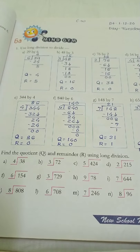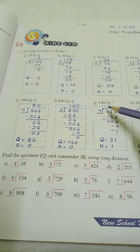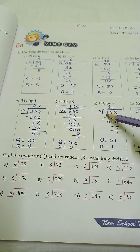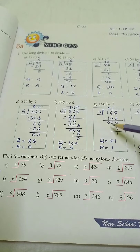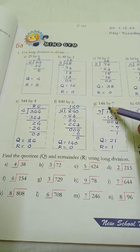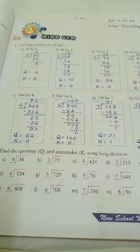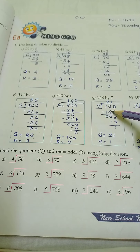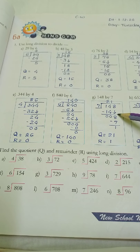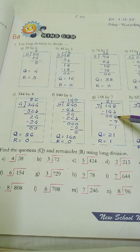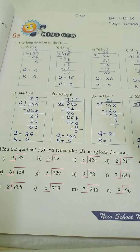Next: 148 divided by 7. The digit 1 is smaller, so give the next number a chance to get 14. 7 ones are 7, 7 twos are 14. 14 minus 14 is 0. Write the quotient first. Carry down 8. 7 ones are 7; 8 minus 7 is 1. Quotient is 21 and remainder is 1.